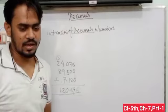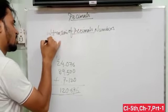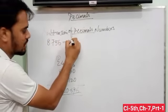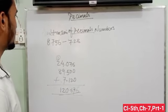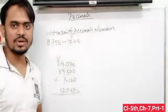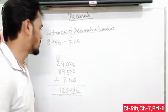Let's take an example: 8.756 minus 7.8. Same as addition of decimal numbers, we have some steps to subtract decimal numbers. Then first step: convert the decimal into a like fraction.